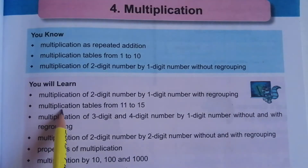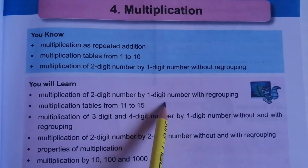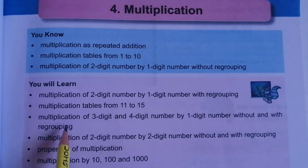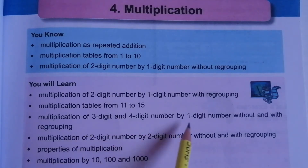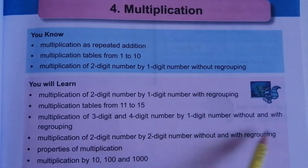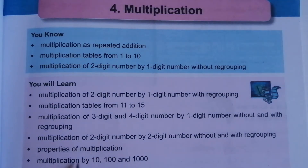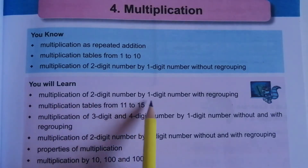Today we are going to start the new chapter: multiplication. In this chapter, we are going to discuss multiplication of a two-digit number by a one-digit number with regrouping, multiplication tables from 11 to 15, multiplication of three-digit and four-digit numbers by a one-digit number without and with regrouping, multiplication of a two-digit number by a two-digit number without and with regrouping, properties of multiplication, and multiplication by 10, 100, and 1000. In this video, we will discuss the first topic: multiplication of a two-digit number by a one-digit number with regrouping.